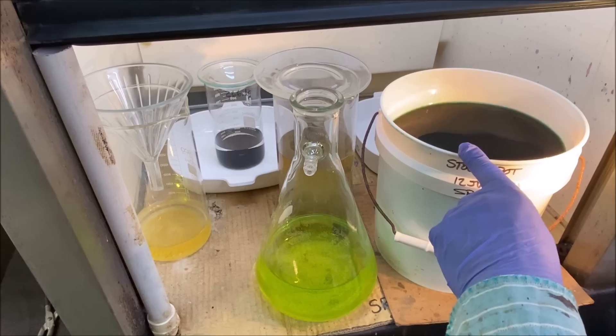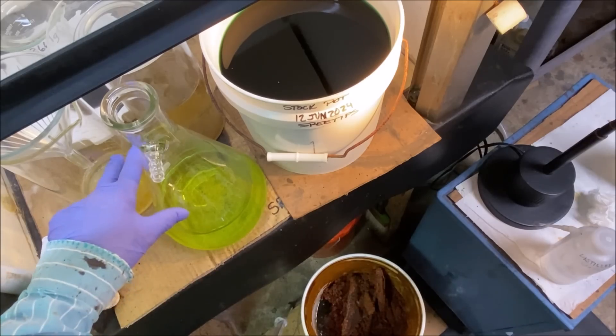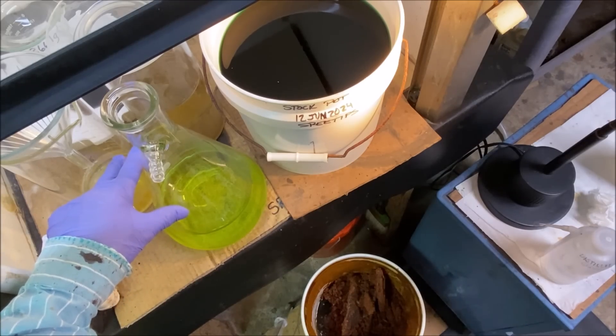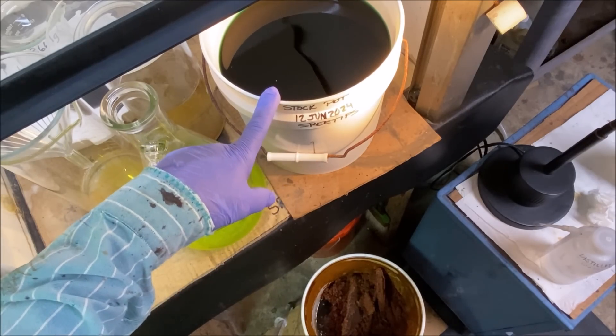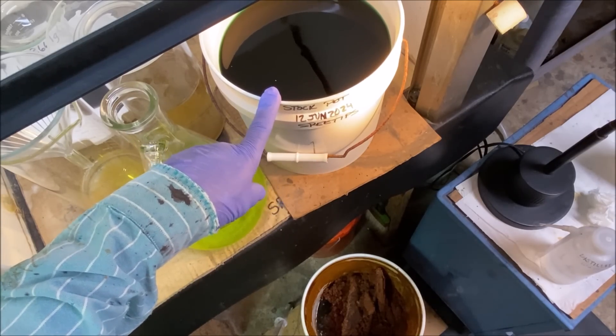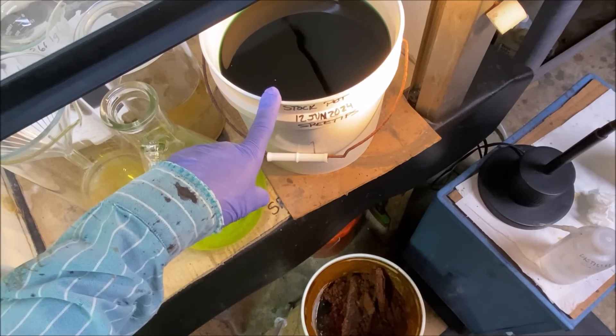These waste solutions contain platinum group metals, which are highly toxic in solution. So the first step in the waste treatment process is to remove the toxic platinum group metals in my stock pot.